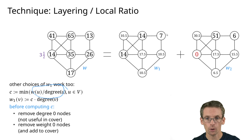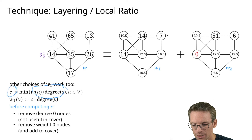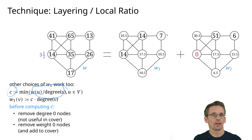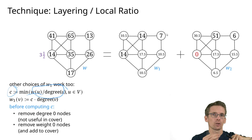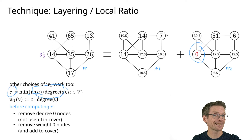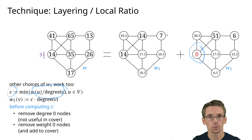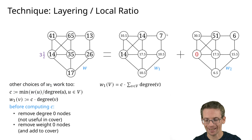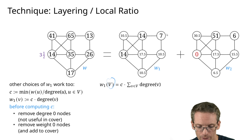With these precautions we guarantee no zeros appear in the calculation. Now let's prove this choice of w1 works. The largest weight a vertex cover could have is achieved by selecting all vertices: w1(V) = sum of c · degree(v) = c · sum of degrees. By the handshaking lemma, the sum of degrees equals 2|E|, so w1(V) = c · 2|E|.